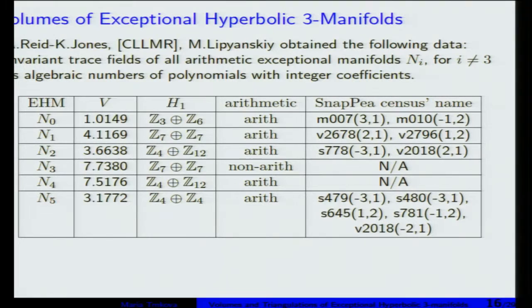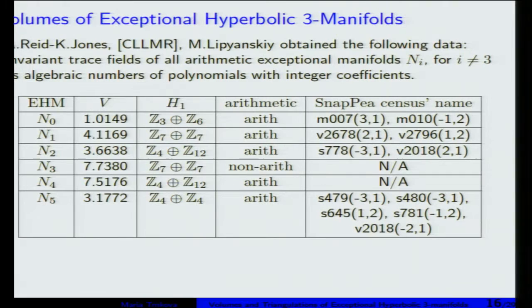Let's look at the volumes of these manifolds — these are just the first digits. I want to ask: do you recognize some of these numbers? The first one looks like the volume of an ideal regular tetrahedron. Another one is four times the Catalan number, which equals the volume of an ideal regular octahedron. So it's very interesting to look at whether these are exactly equal.